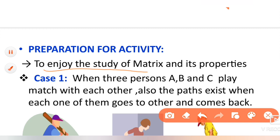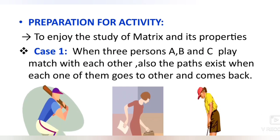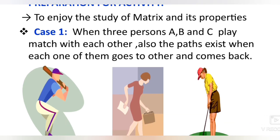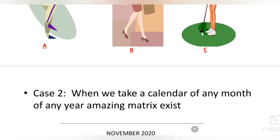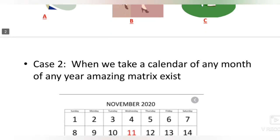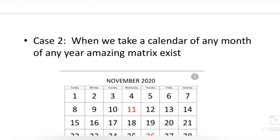I am going to consider two cases. Case one: when three persons A, B, and C play a match with each other, I will form a matrix with the help of this. Also, the paths that exist when each one of them goes to the other end and comes back — this will show you amazing matrix operations. Case two: when we take a calendar of any month of any year, an amazing matrix will exist.